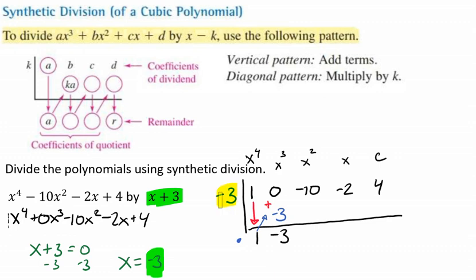Now I'm going to do -3 times -3, which is going to give us a positive 9. So now we're going to add. And when we add that, -10 + 9 is -1.